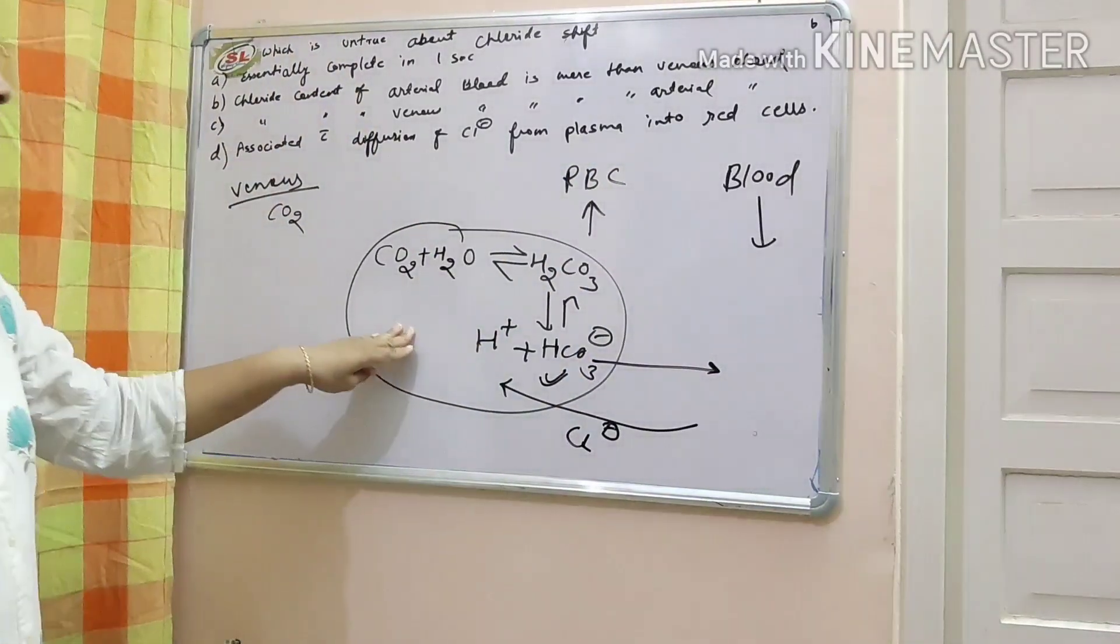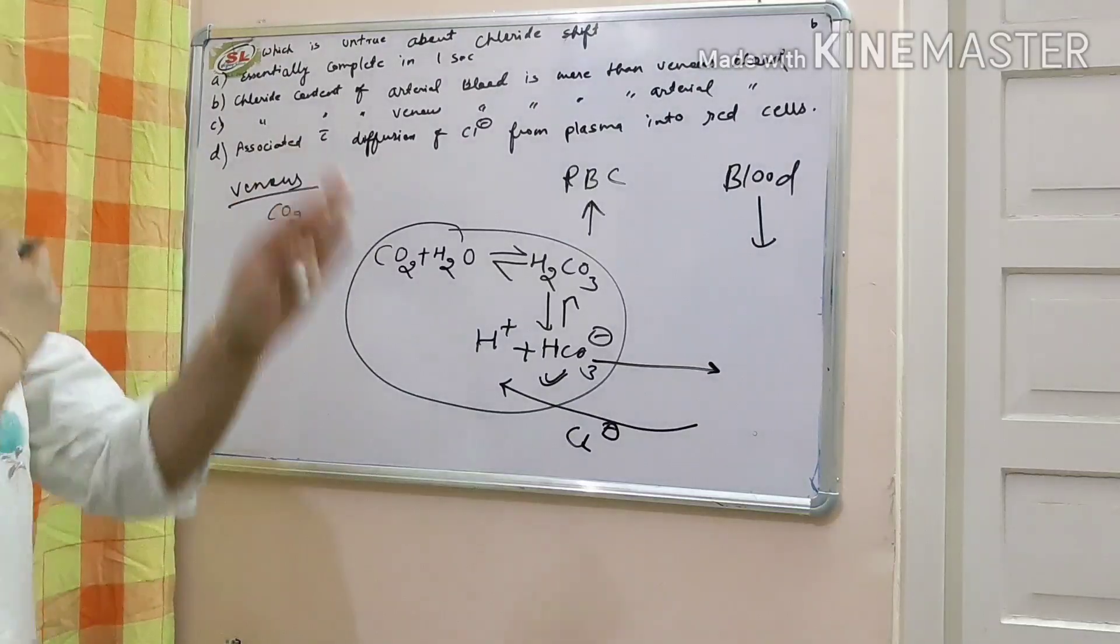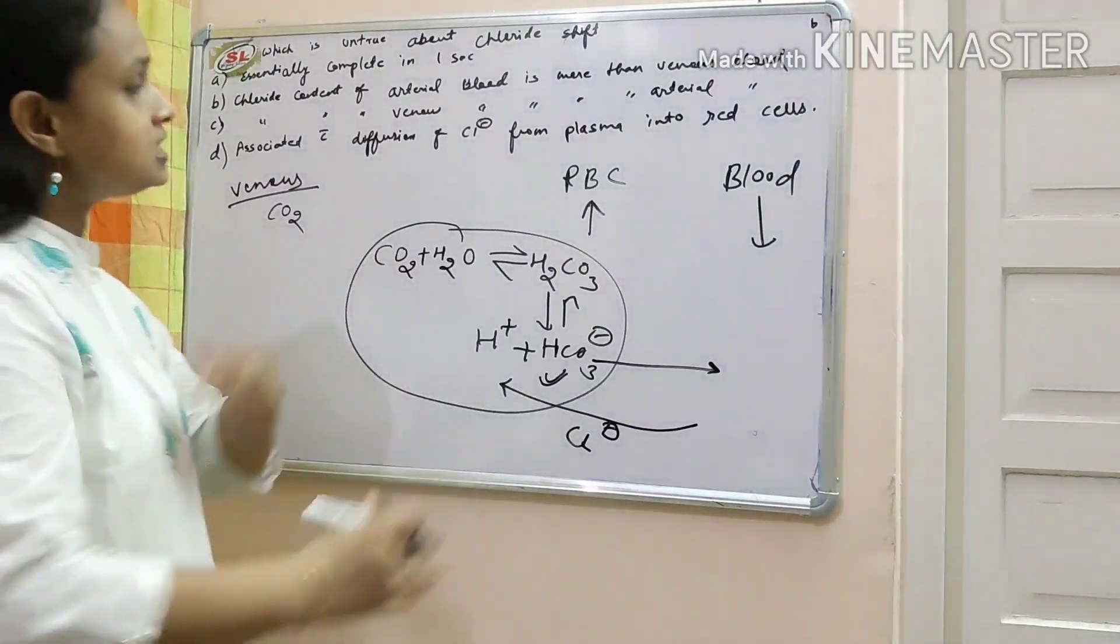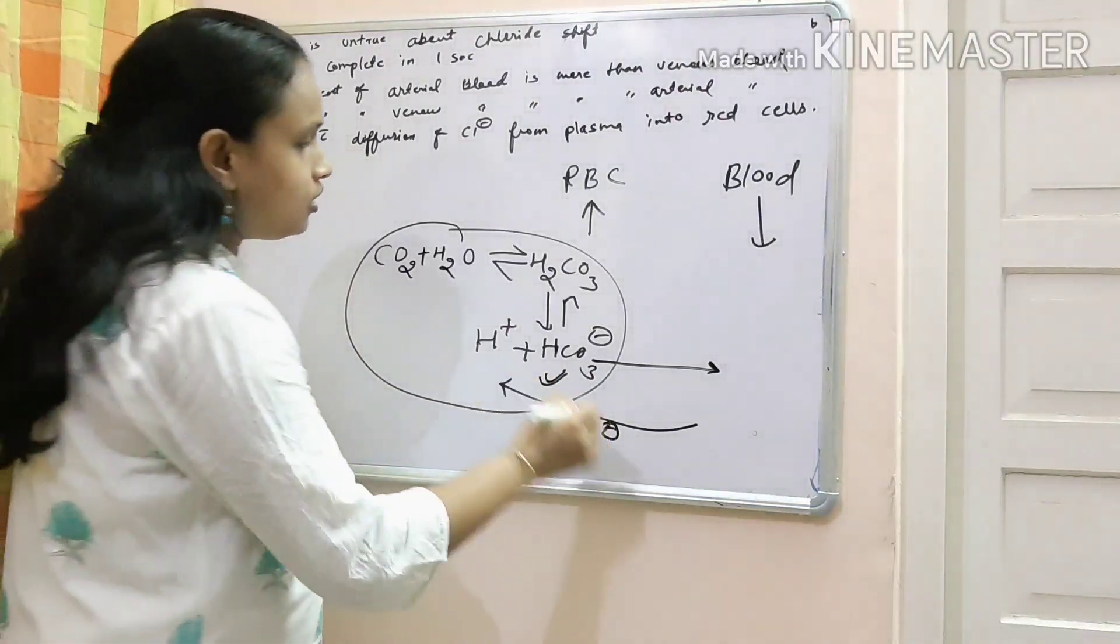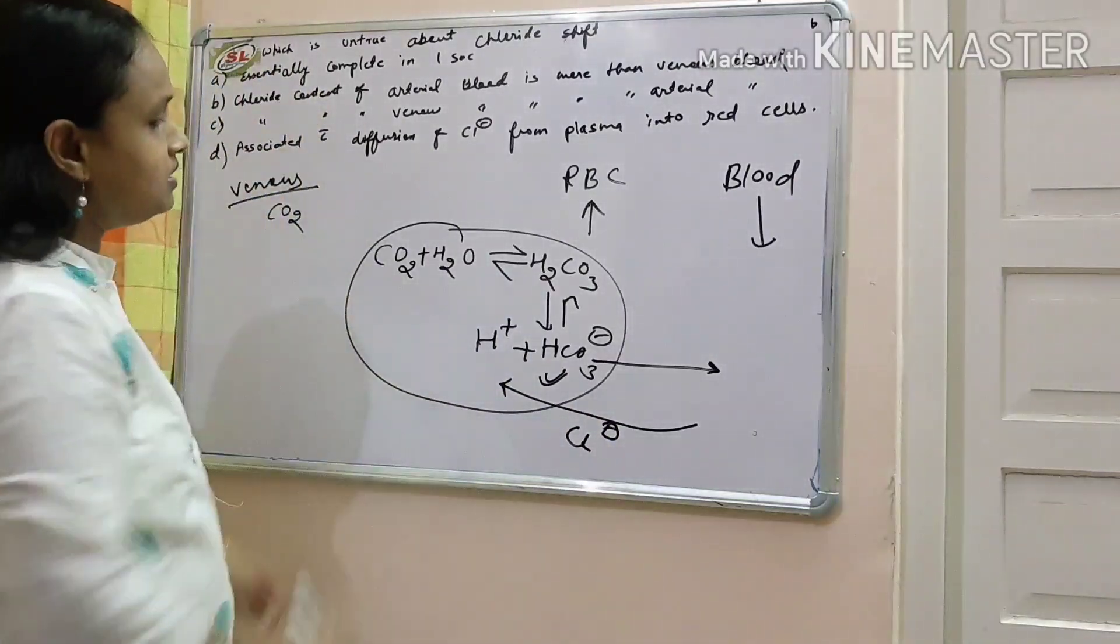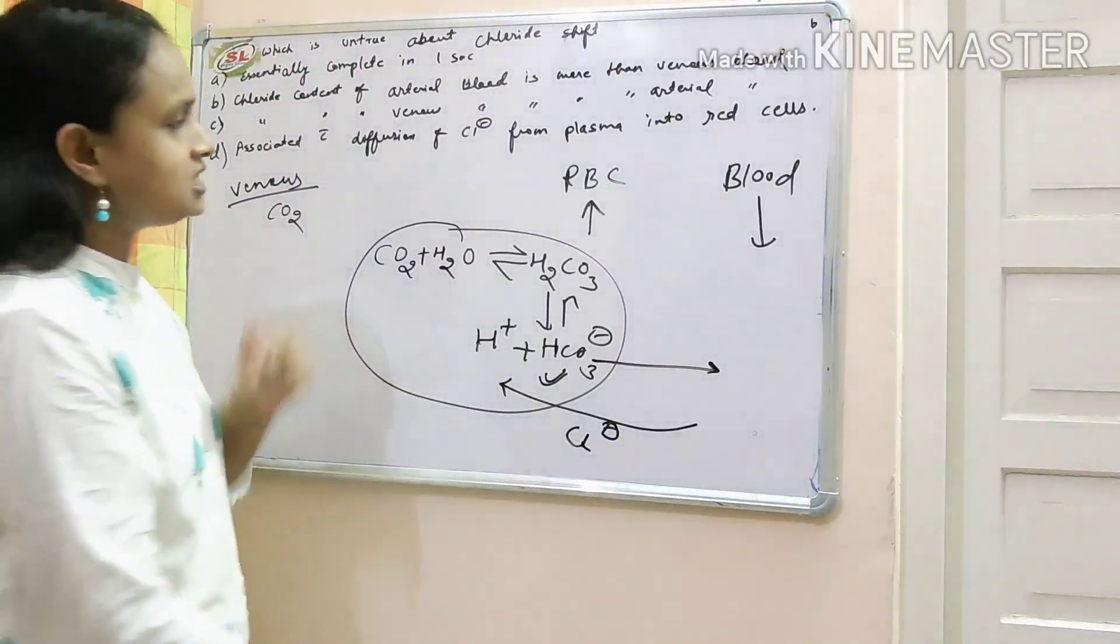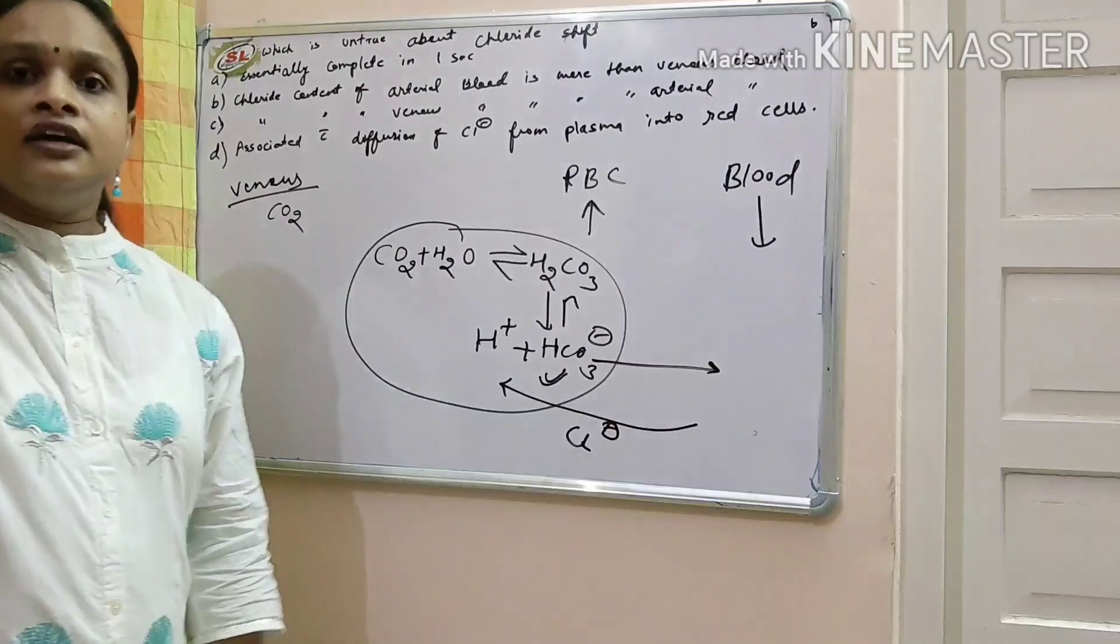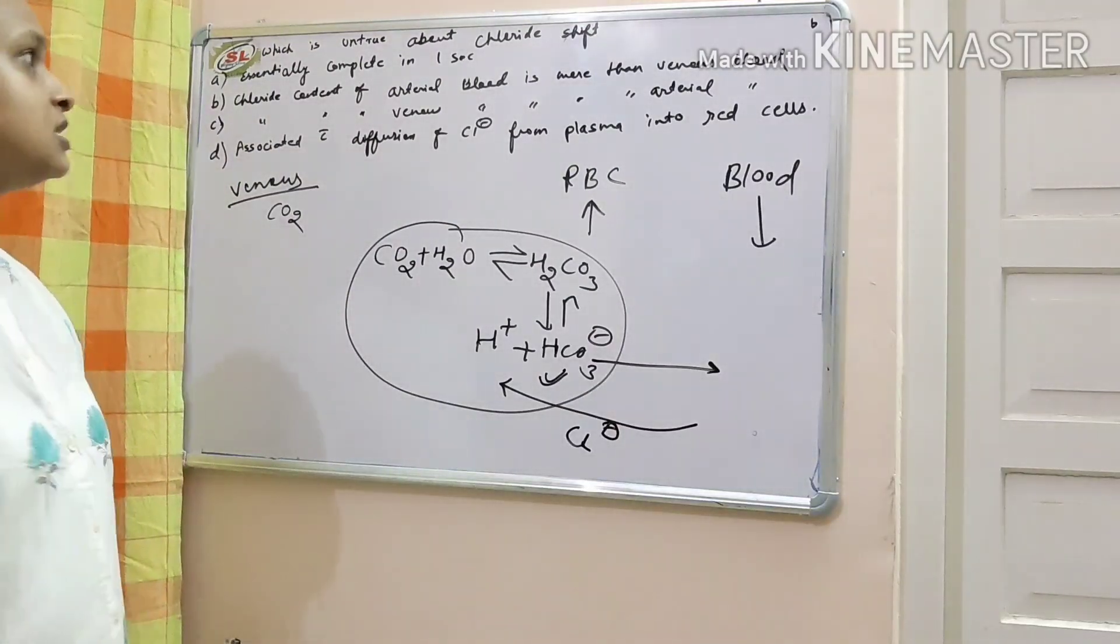And when this thing happens in the arterial blood, just suppose it takes place. More and more of CO2 releases from the RBC into the plasma. So just reverse reaction occur and reverse chloride shift happens.